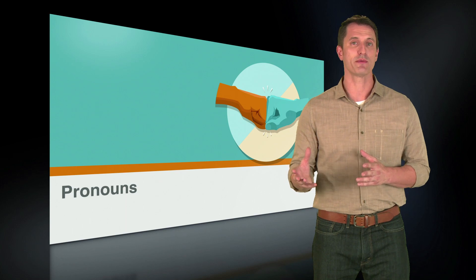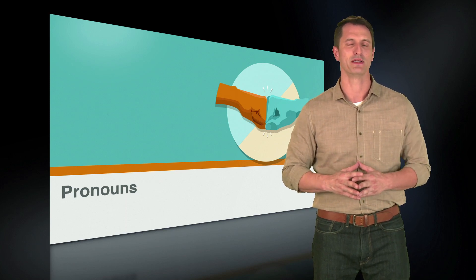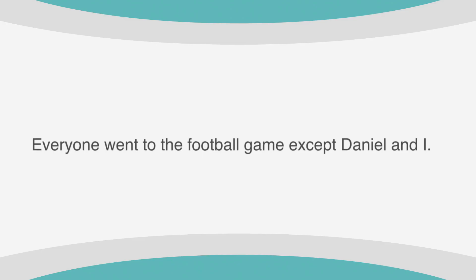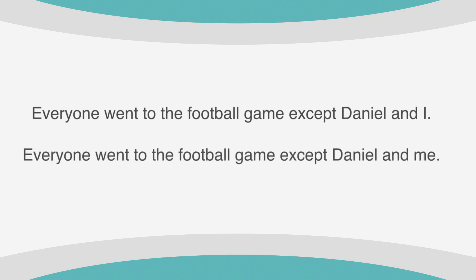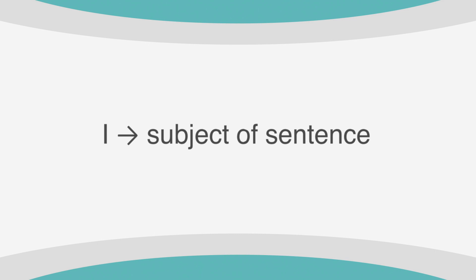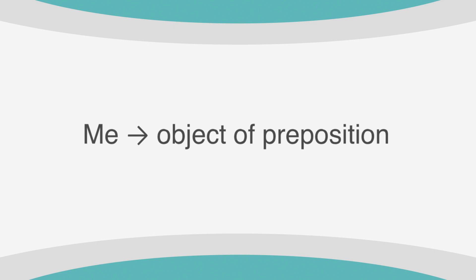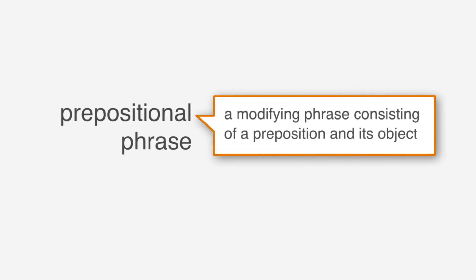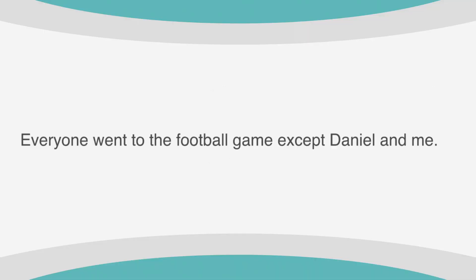So far we've gone through pronoun agreements and pronoun cases, all of which are pretty straightforward, but pronouns can get tricky when you have to decide between the words I and me. Everyone went to the football game except Daniel and I, or everyone went to the football game except Daniel and me — which is correct? Daniel and me is the correct choice. It goes back to whether we need a subjective or objective pronoun. I is used in place of the subject of a sentence, and me is used to replace an object of a preposition. A prepositional phrase is a modifying phrase consisting of a preposition and its object. So in this case, to the football game is the preposition, and Daniel and me is the object, which is why me is correct instead of I.